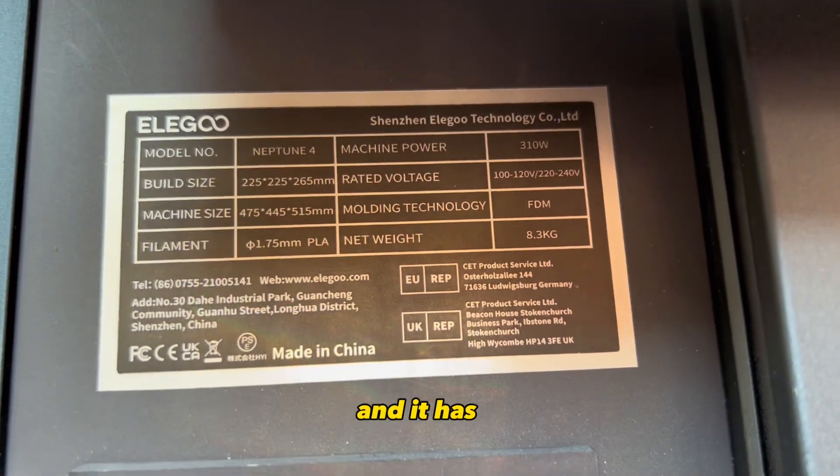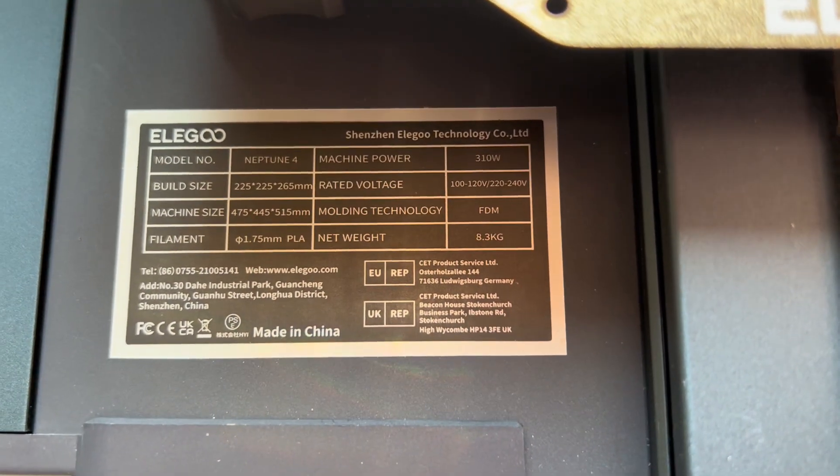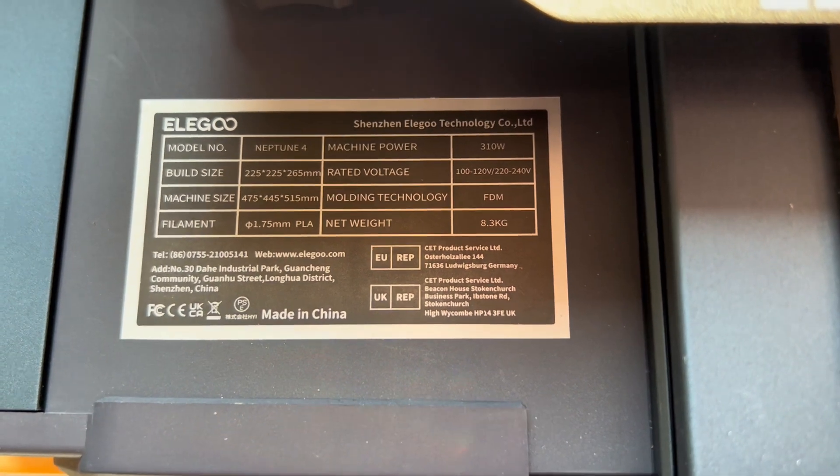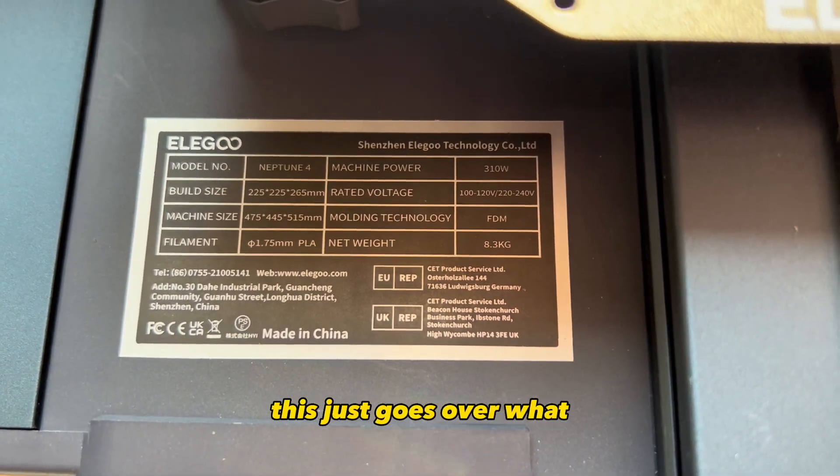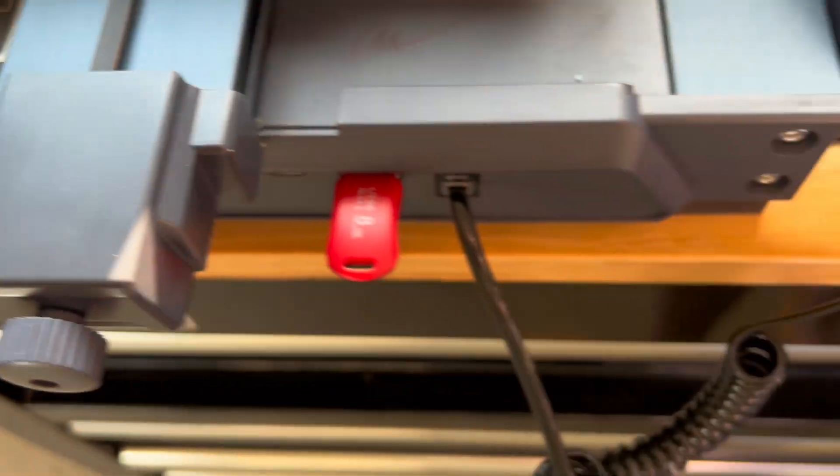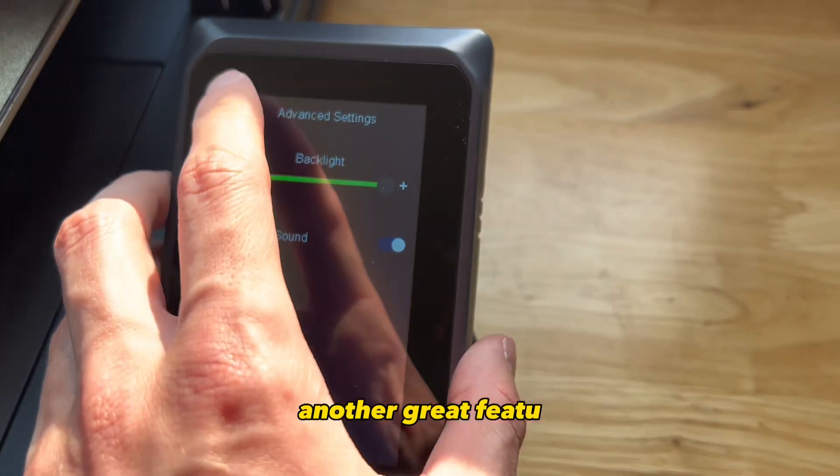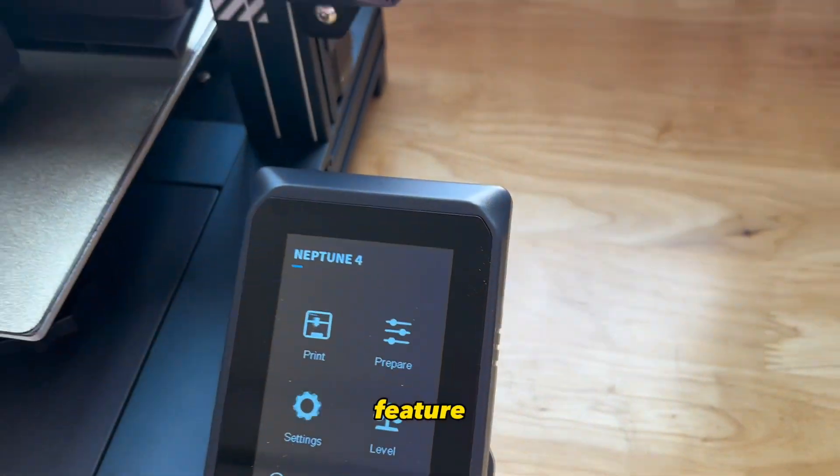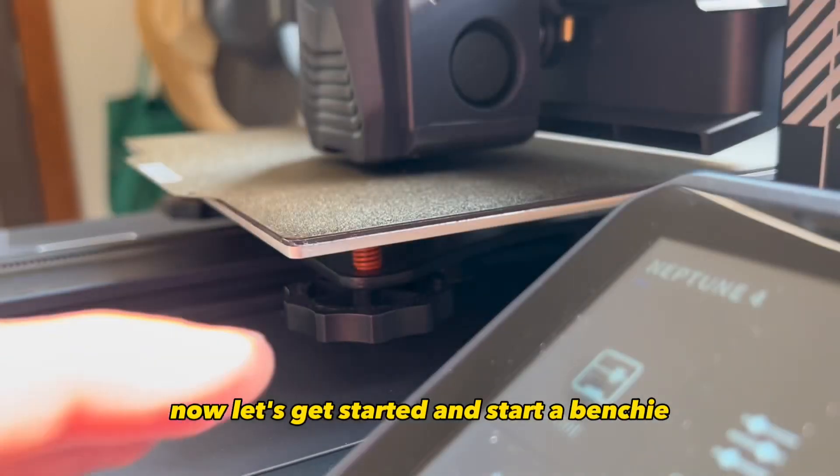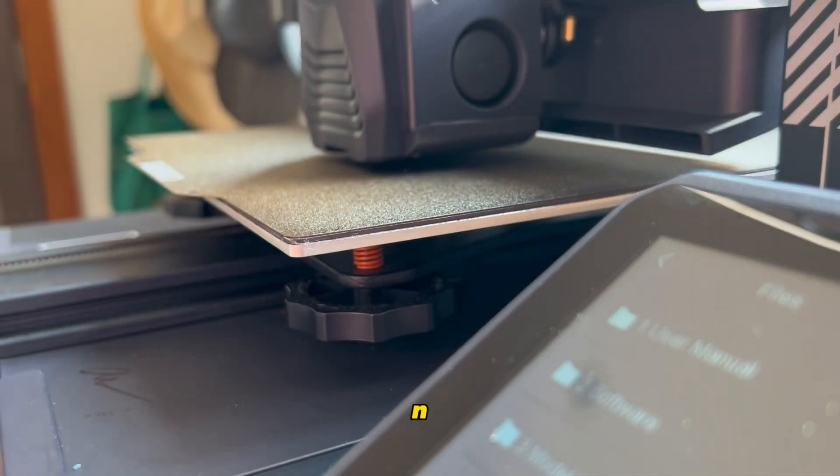It has a really nice little sticker on the left side that you can see here, and this just goes over what it is, build plate size and all that. Another great feature is the backlight feature, you can turn down the screen brightness. Now let's get started and start a benchy.